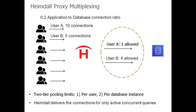This highlights another key idea: you can have lots of users on the front side of the proxy, but on the back side you can constrain their total actual connections to the backend database. For example, user A has 10 physical connections to the proxy, but only one is allowed to the backend. User B may only have five connections, but they're allowed four physical connections to the backend.